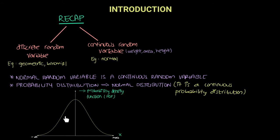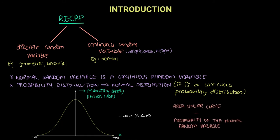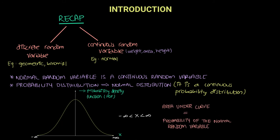It may look like this graph is touching the axis at zero, but it is not — it actually extends all the way to positive and negative infinity. So the domain of the normal distribution is minus infinity to plus infinity. The area under the curve gives you the probability of the normal random variable.